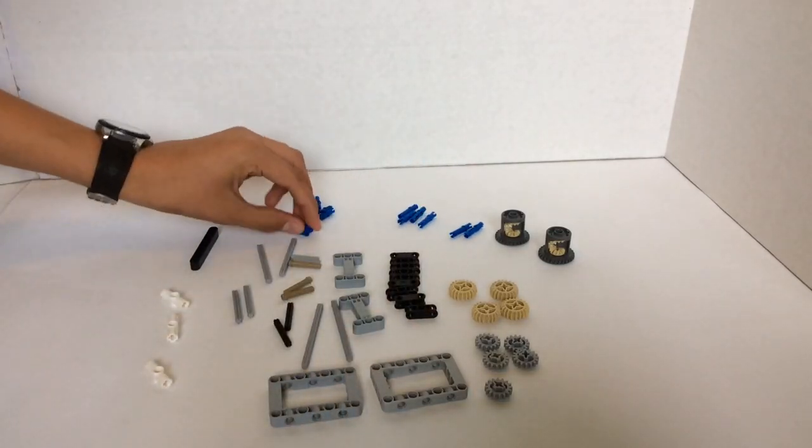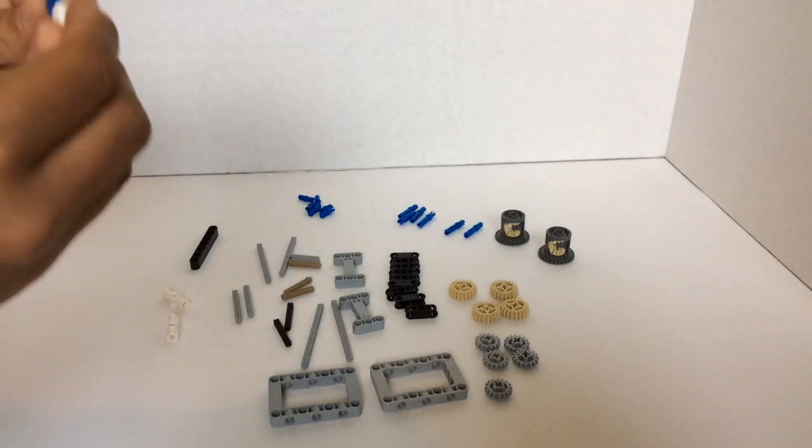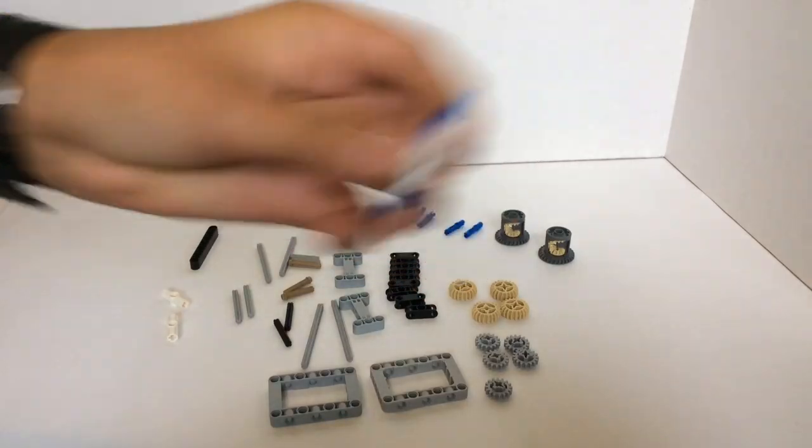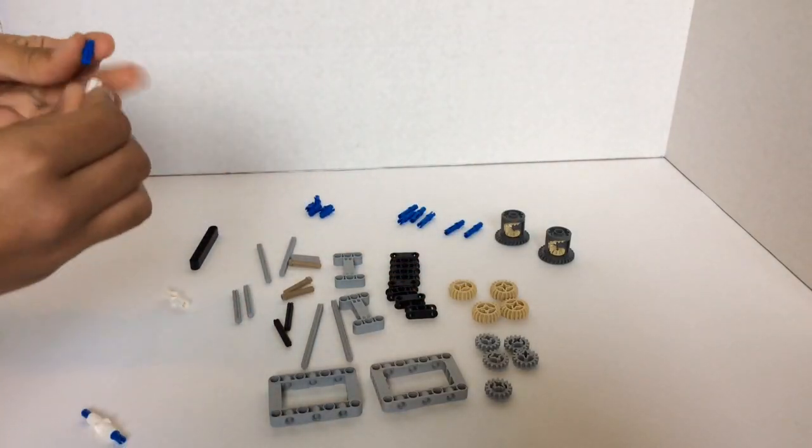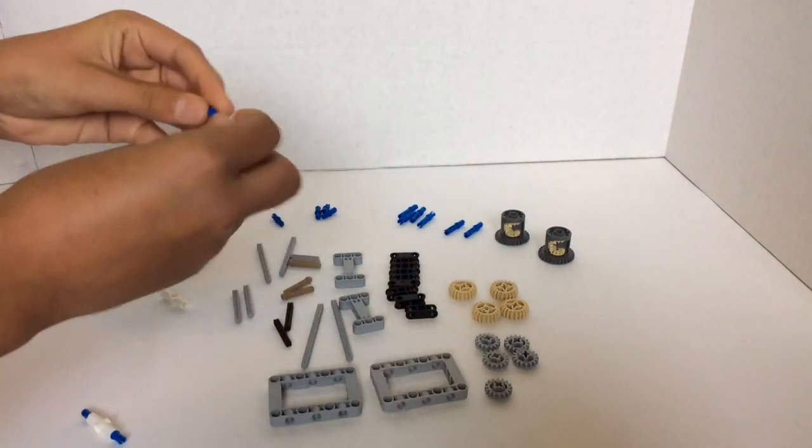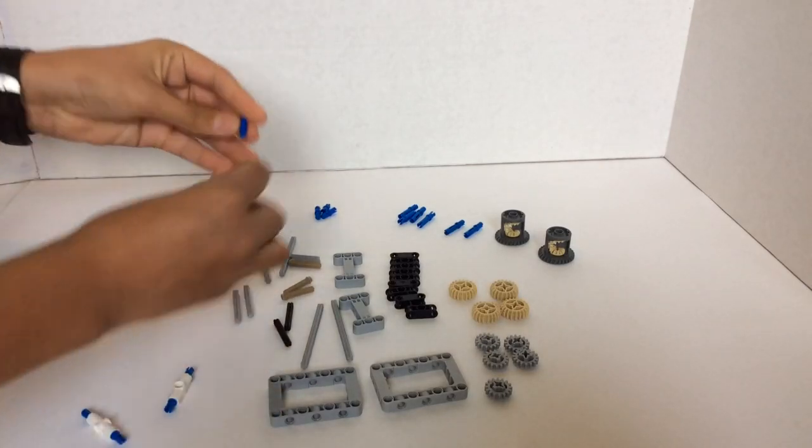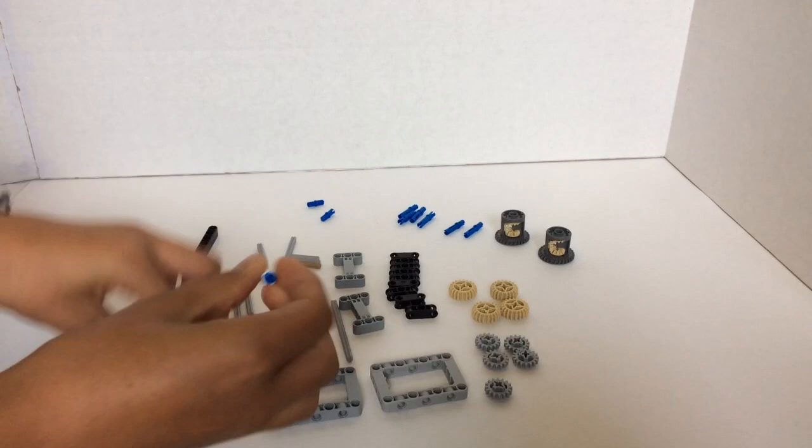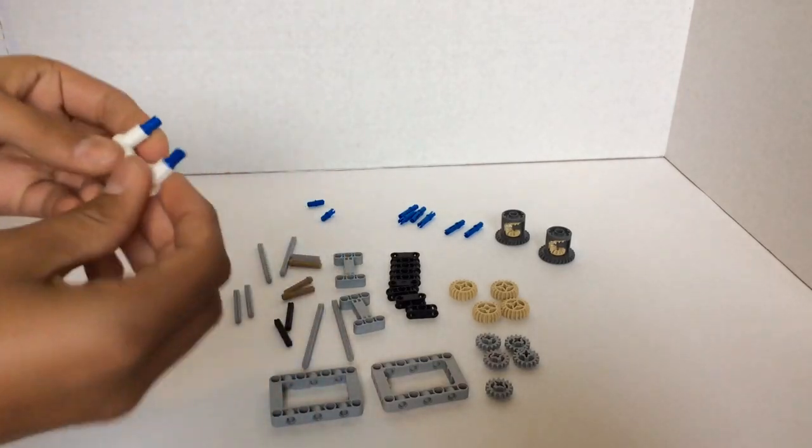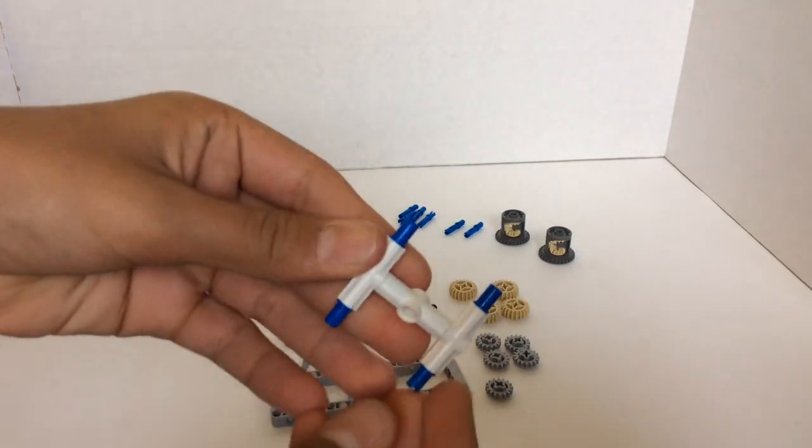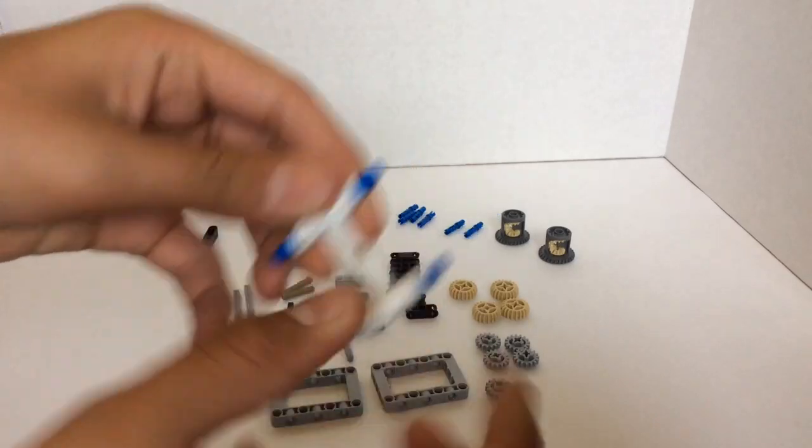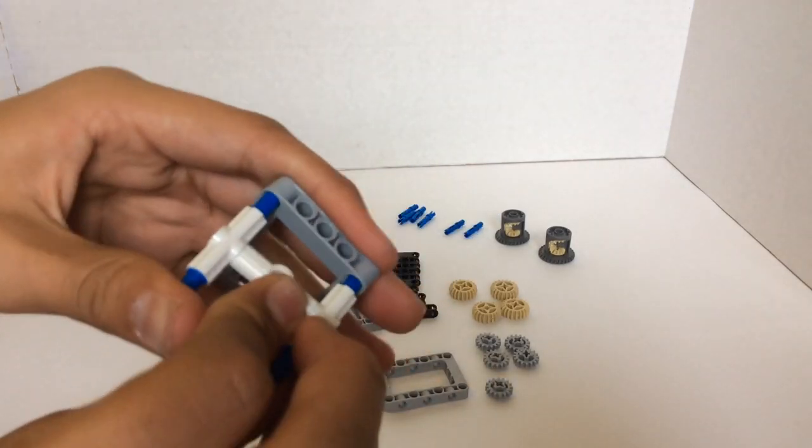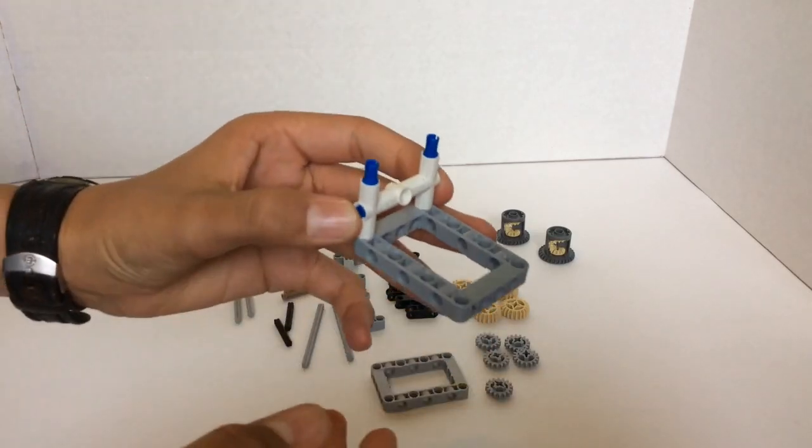So what you want to do first is take one of these and do that three times with all of them. And then you're going to connect them like this. It doesn't matter which way this part is facing. And we're going to put that on one end here.